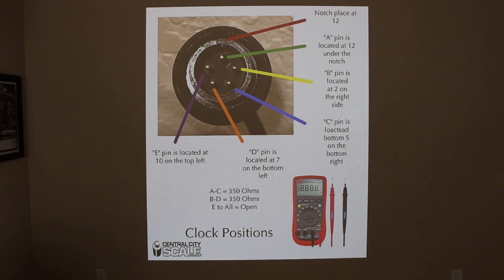As I was saying earlier, you go from A to C positions and you should get 350 ohms, followed by going from B to D and that should be 350 ohms as well. Then you can go from that E position to every pin - so E to A, E to B, E to C, E to D - and it should be open, so you should get no reading.